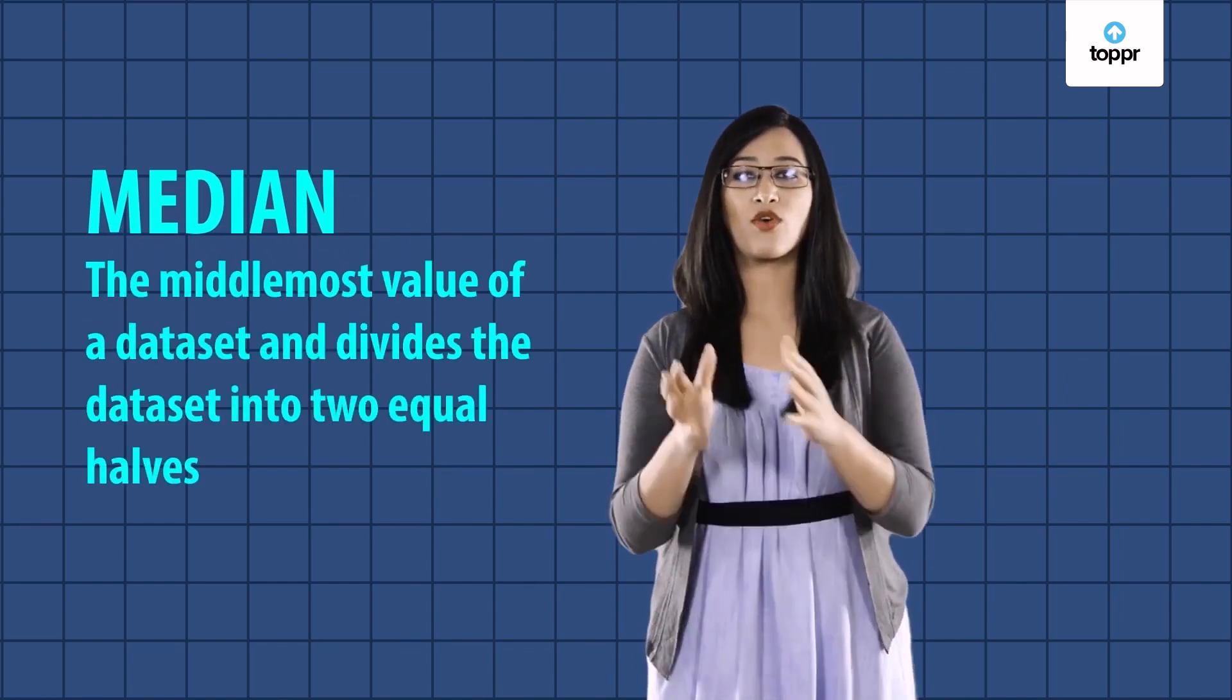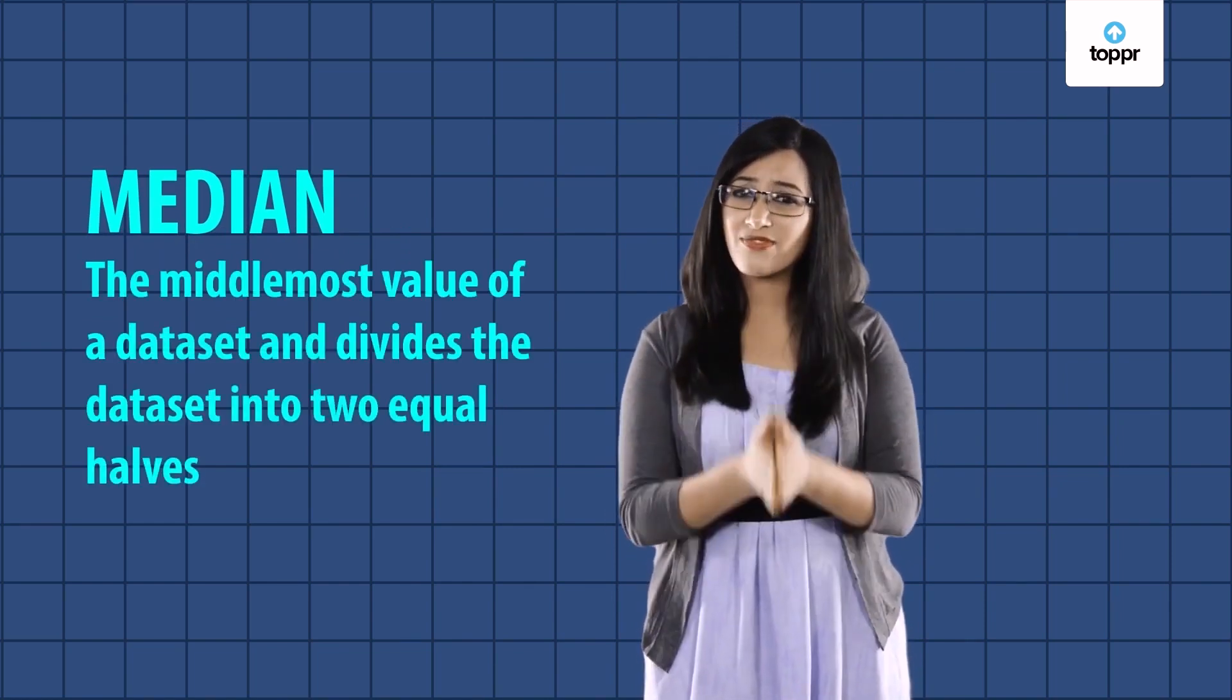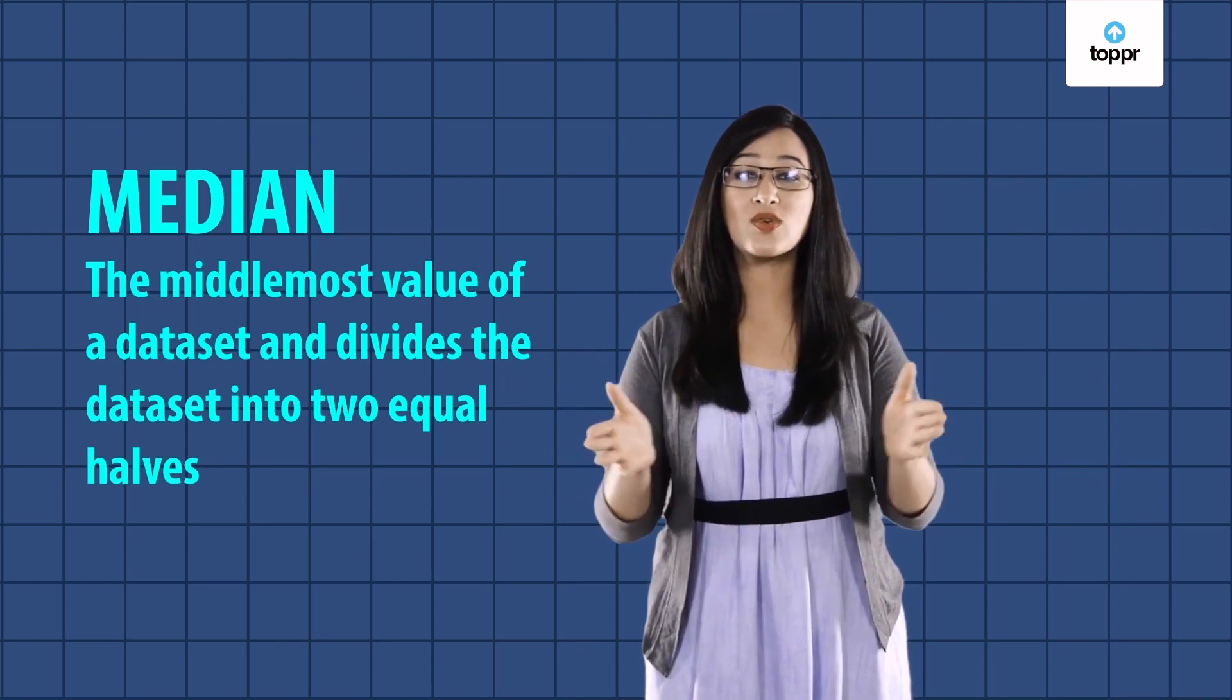When a data set has numbers which are very different from the remaining numbers in the set, a better representation is given by something called the median. This is the measure of central tendency that gives the middle-most value of a data set and divides the data set into two equal halves.